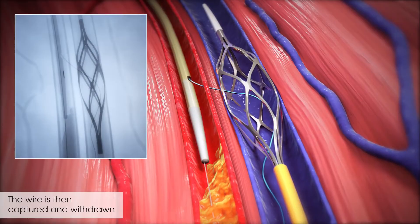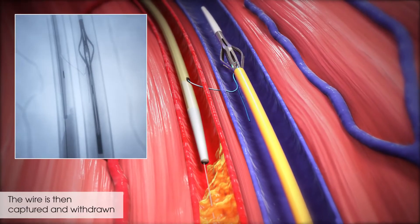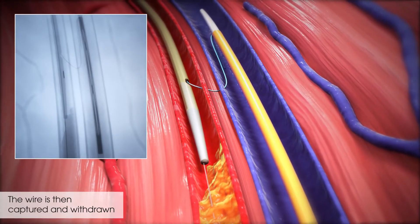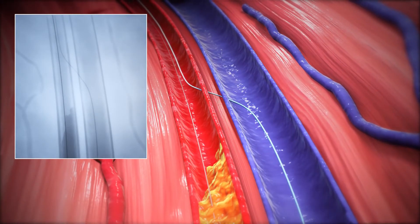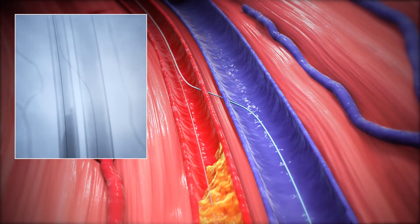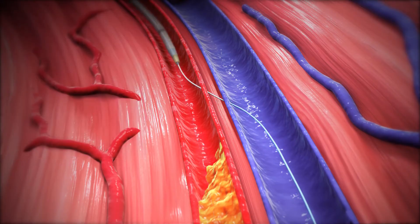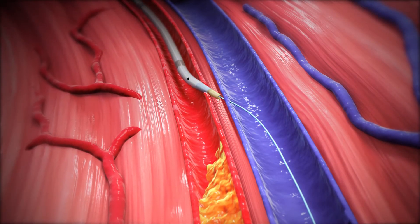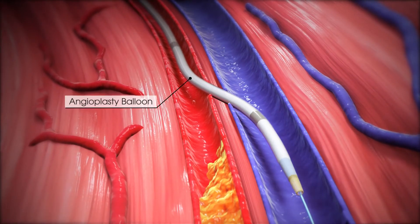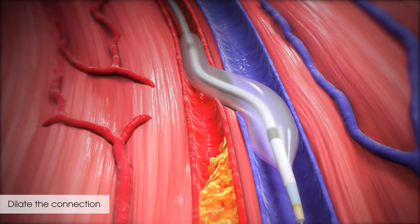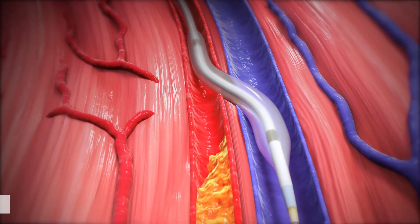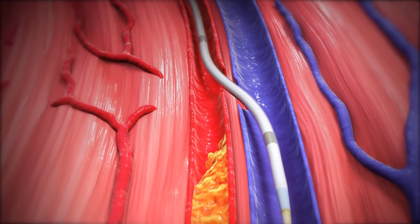The wire is then captured and withdrawn through the venous access on the bottom of the foot. A small angioplasty balloon is used to dilate the connection, allowing passage of other devices.